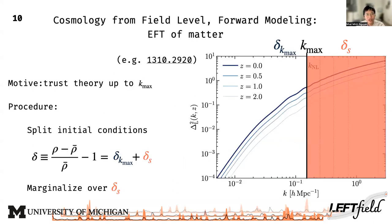The EFT approach simply admits that we trust our theory only down to some certain scale or wavelength, here labeled by the Fourier wave number k_max. Beyond this scale we do not have a good description, so we must rigorously split the density perturbations — expressed as delta — into long-wavelength and short-wavelength modes around k_max, then marginalize over the short modes delta_S. This is something often overlooked in the field-level approach until LFT-field.